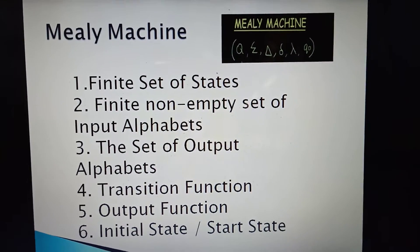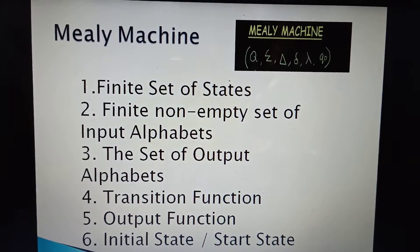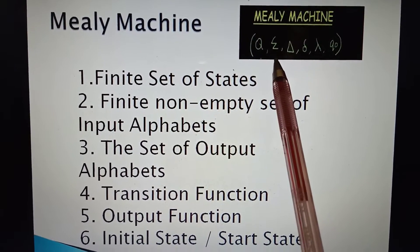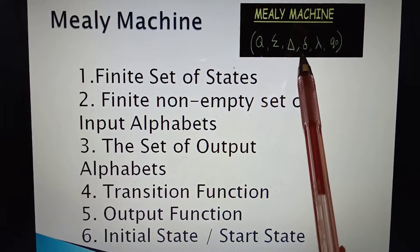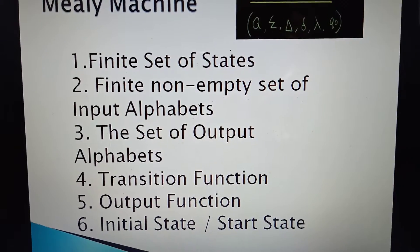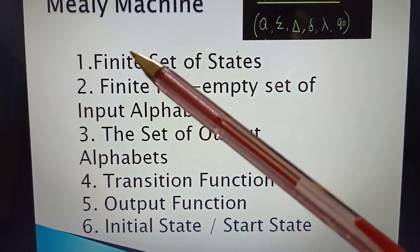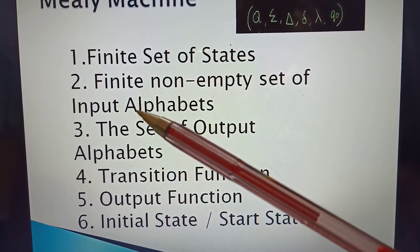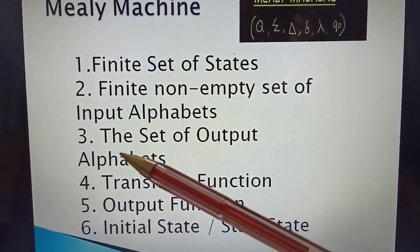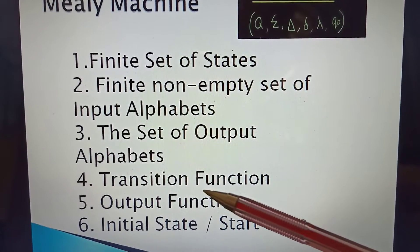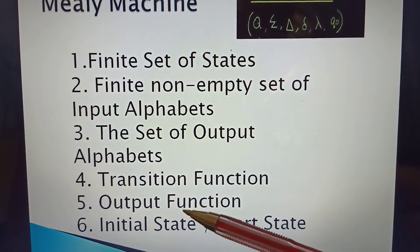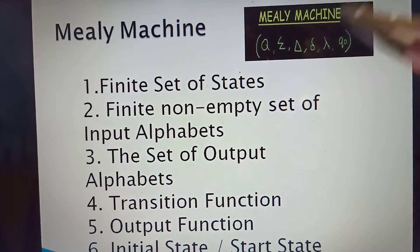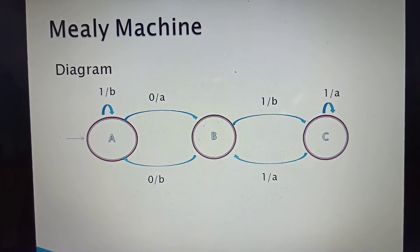The formal definition of the Mealy machine has six tuples: Q, Sigma, Delta, Del, Lambda, and Q-naught. Q is the finite set of states; Sigma is the finite non-empty set of input alphabets; Delta is the set of output alphabets; Del is the transition function; Lambda is the output function; and Q-naught is the initial or start state.